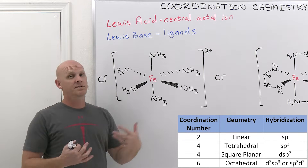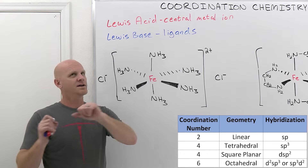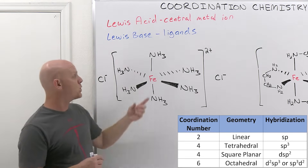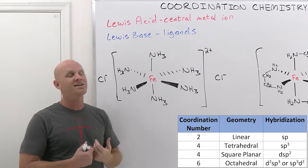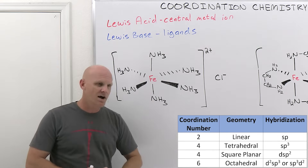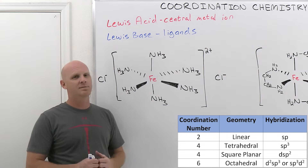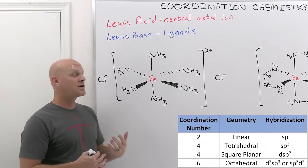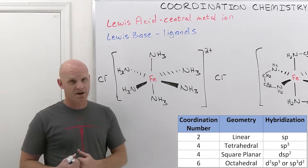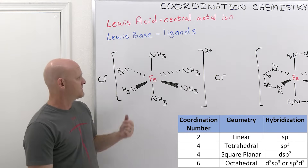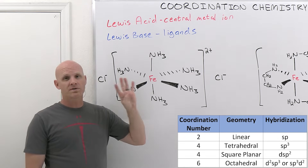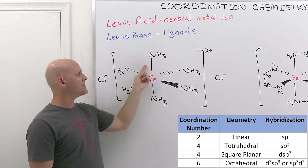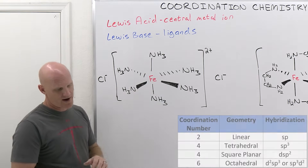Those are the common geometries we're going to deal with in this chapter. There are geometries involving more than six bonds around the central metal ion, but we're not going to discuss those. So linear, square planar, tetrahedral, and octahedral — these correspond to what we call coordination numbers of 2, 4, 4, and 6. The coordination number is just the number of bonds coming off that central metal ion.